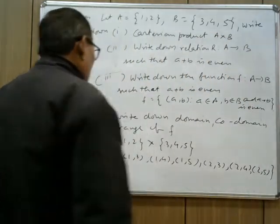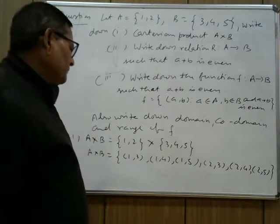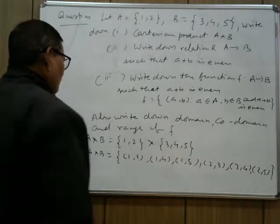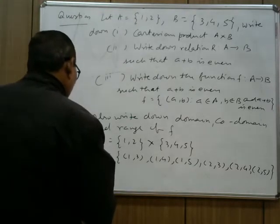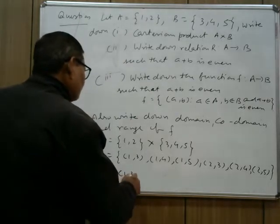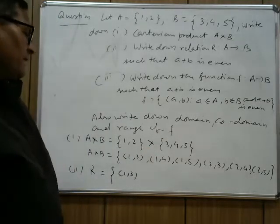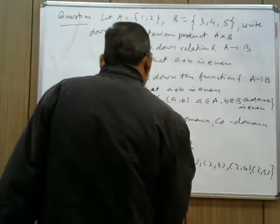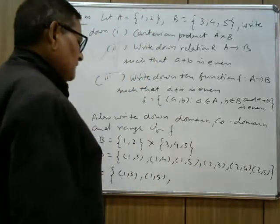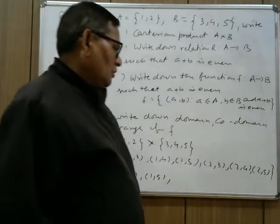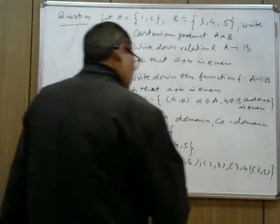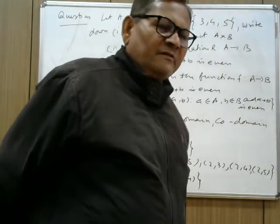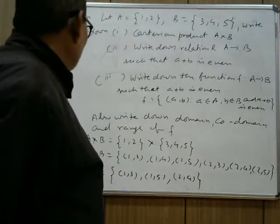Now write down the elements of the relation — those elements of A cross B where the sum of the first and second element in the ordered pair is even. The sum of 1 and 3 is 4, which is even, so (1,3) is in the relation. The sum 1+4=5 is odd, so (1,4) is not. The sum 1+5=6 is even, so (1,5) is in. The sum 2+3=5 is odd, so (2,3) is not. The sum 2+4=6 is even, so (2,4) is in. The sum 2+5=7 is odd, so (2,5) is not.